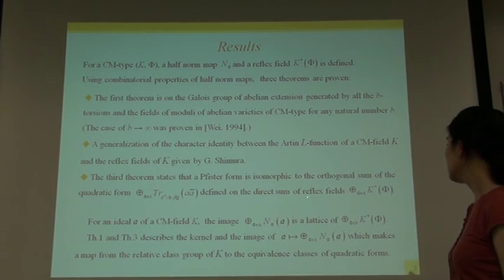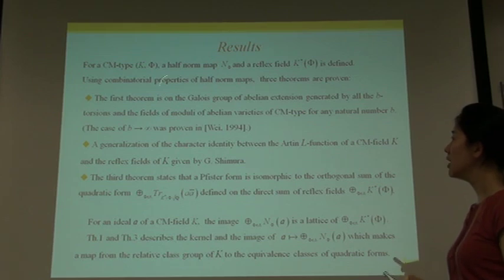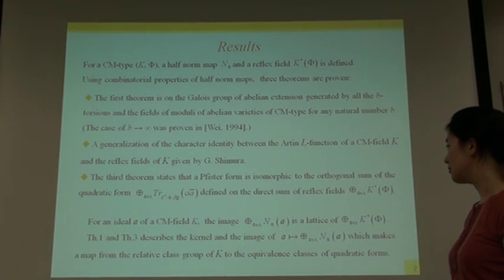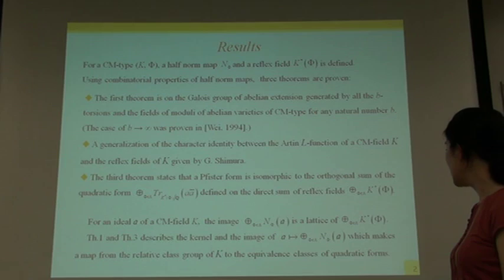As a summary, I'd like to comment on Theorem 1 and Theorem 3 particularly. For an ideal A of the CM-field K, the image of N-phi A is the ideal class of K-star-phi.